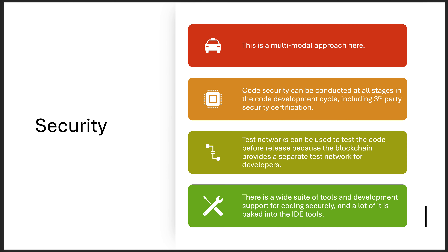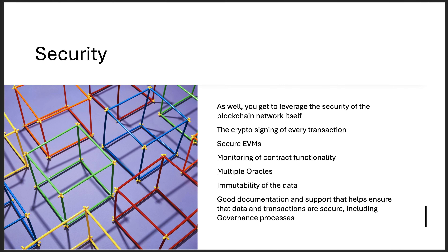Doing thorough security auditing is a huge trust measure. You get to leverage the blockchain security as well — the EVM, crypto signing, contract monitoring, and setting up multiple oracles. Once data is written to the blockchain, it can't be changed. Good documentation and support help ensure everything is solid, and there's a lot of good documentation around governance processes. Once you've addressed code security, the rest falls into place. The big ones are the oracle and monitoring of contract functionality — that's where your programmer and security monitoring come into play.